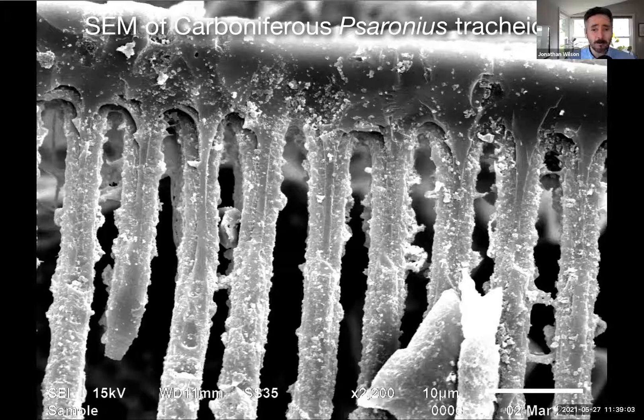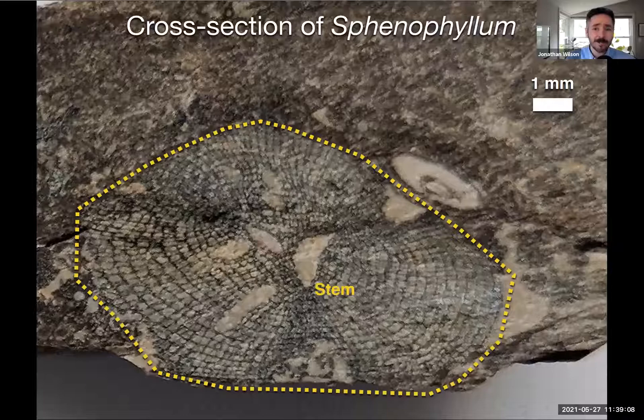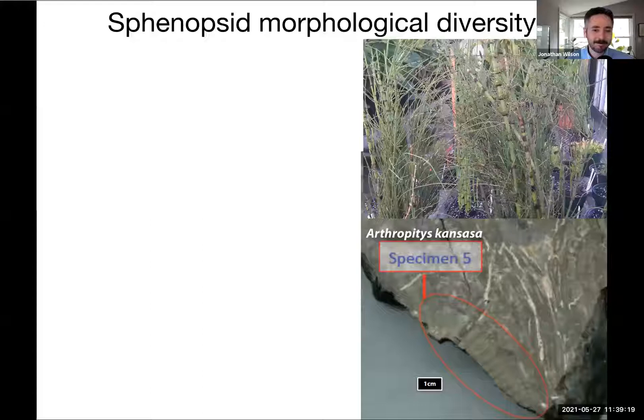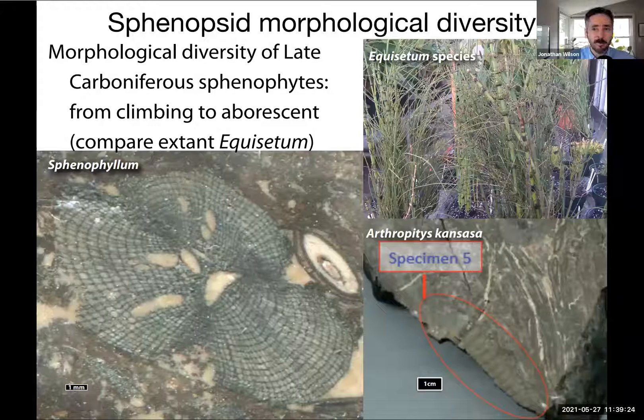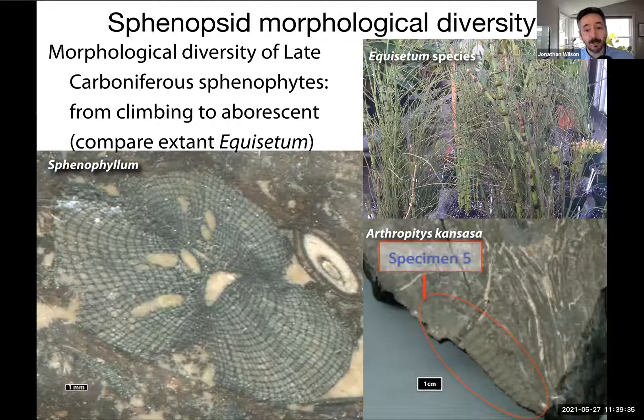A third important plant is Sphenophyllum, a small scrambling or climbing sphenopsid with really extraordinary xylem. Many of us are familiar with the sphenophytes as a highly stereotyped plant group, but there are some surprises here. Within the sphenophytes, we have Sphenophyllum, Arthropidae, and the extant horsetail Equisetum — including Equisetum giganteum, the giant horsetail — for comparison. These plants are closely related but actually physiologically distinct.